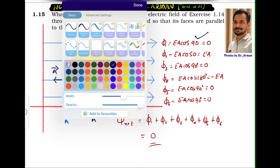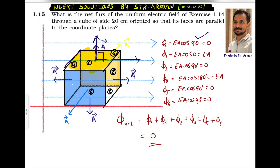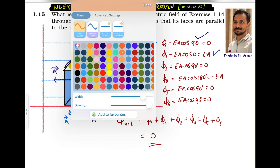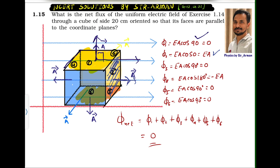For the second surface, the electric field and the area vector are pointing in the same direction, so it is E·A·cos 0°, and since cos 0° = 1, the flux is E·A. For the third surface at the bottom, the area vector is pointing downward while the electric field is horizontal, so the angle is again 90°, giving E·A·cos 90° = 0.